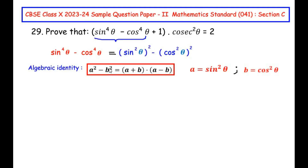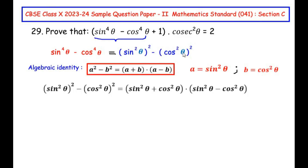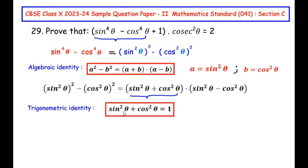Here, a² is (sin²θ)² and b² is (cos²θ)², so by comparison a = sin²θ and b = cos²θ. So (sin²θ)² - (cos²θ)² = (sin²θ + cos²θ)(sin²θ - cos²θ). Now sin²θ + cos²θ is one of our trigonometric identities and equals 1, which means the (a+b) term becomes 1.